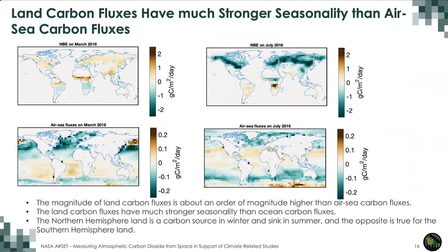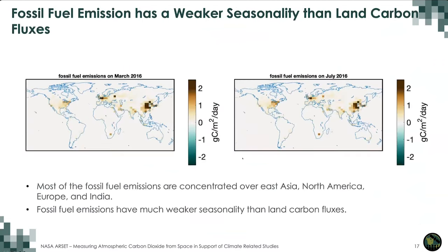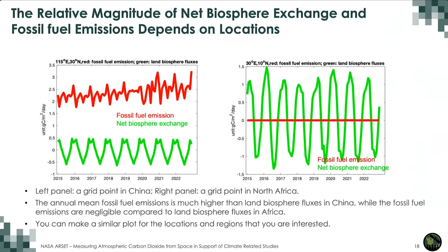These two plots show fossil fuel emissions for March 2016 and July 2016. Most fossil emissions concentrate over East Asia, Europe, and North America. Fossil fuel emissions show much weaker seasonal changes than the net biospheric exchange over land. The relative magnitude of NBE and fossil fuel emissions depends on location. At one point in China, the fossil fuel emission magnitude is much larger than the biosphere fluxes. While at one point in Africa, the fossil fuel emission is almost zero.